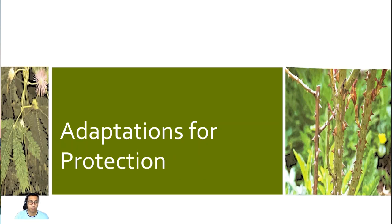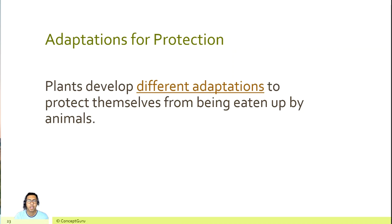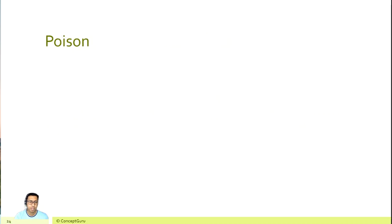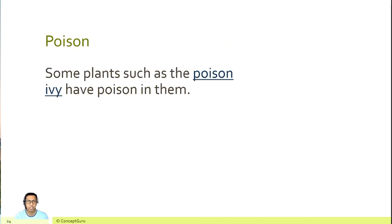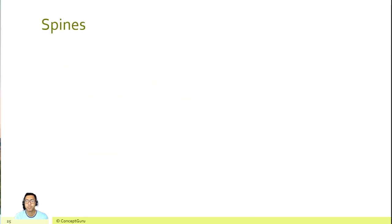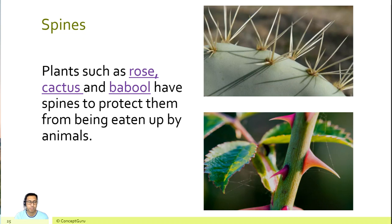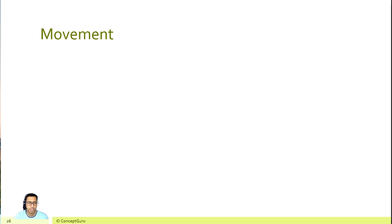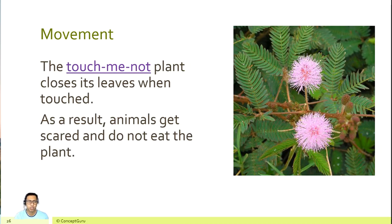Some plants have adaptations for protection. Plants develop different adaptations to protect themselves from being eaten up by animals. Some plants such as poison ivy have poison in them — if one touches them, the poison will make the skin itch. Plants such as rose, cactus and babul have spines to protect them from being eaten by animals. The touch-me-not plant closes its leaves when touched, so animals get scared and do not eat the plant.